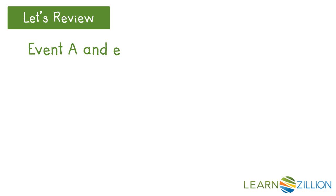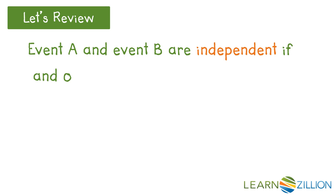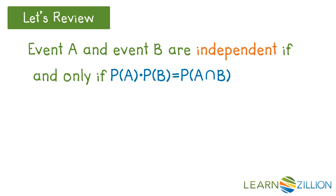Let's review. Events A and B are independent if and only if the product of the probability of A times the probability of B is equal to the probability of A and B.